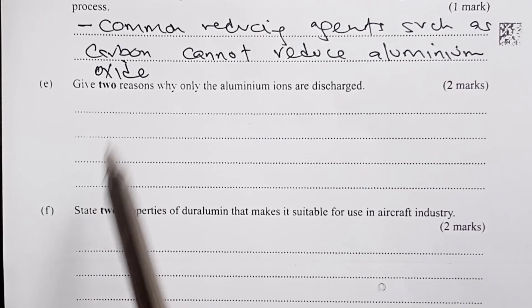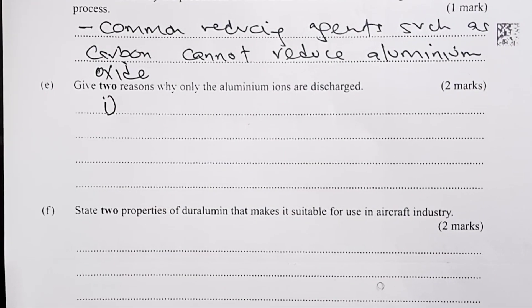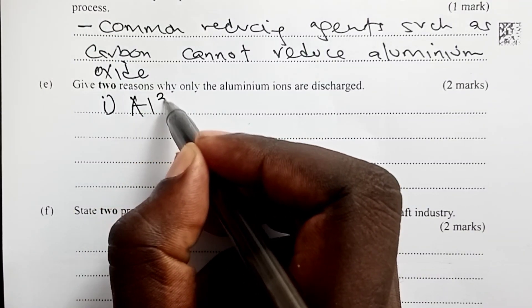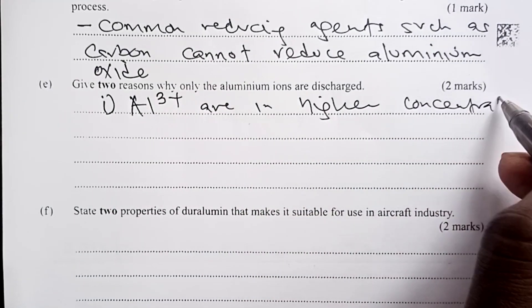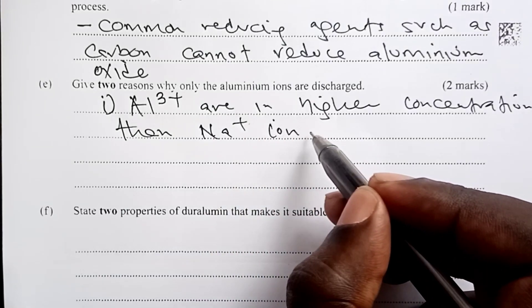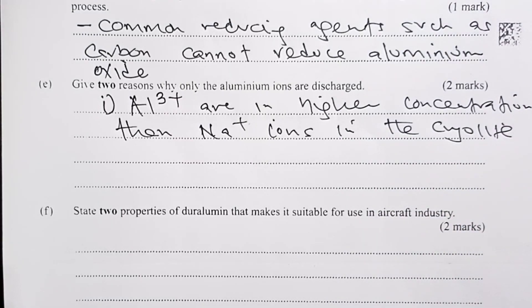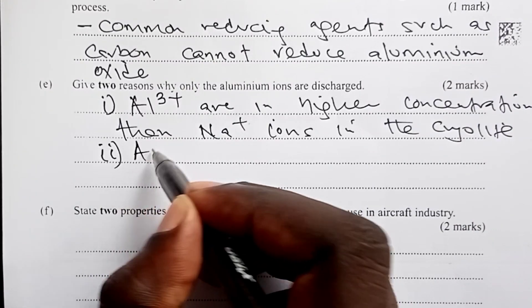To the next question, give two reasons why only aluminum ions are discharged. Remember, in our electrolyte, we have a mixture of cryolite and aluminum oxide. Why do we only discharge aluminum ions? Two reasons here. One, aluminum ions are in higher concentration. They are in higher concentration than sodium ions are in the cryolite.